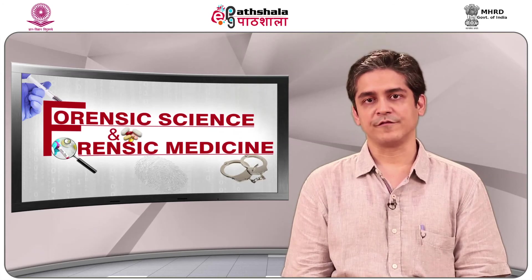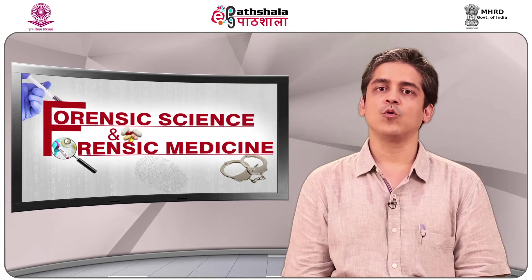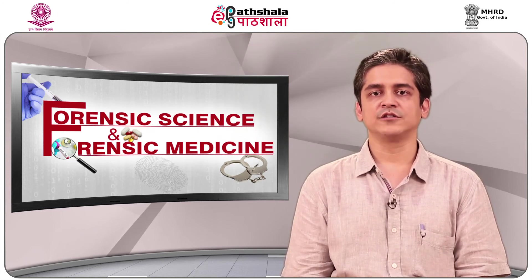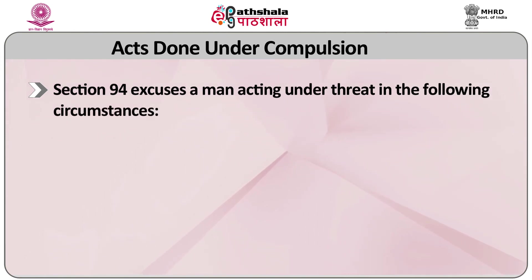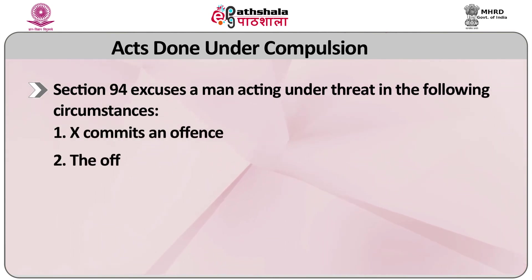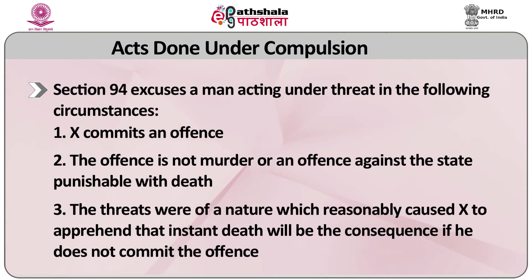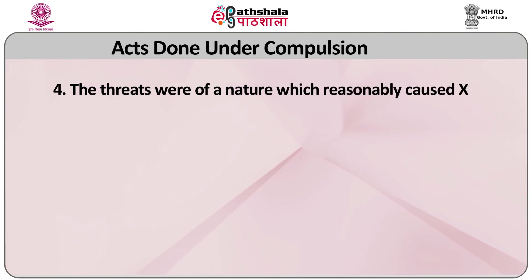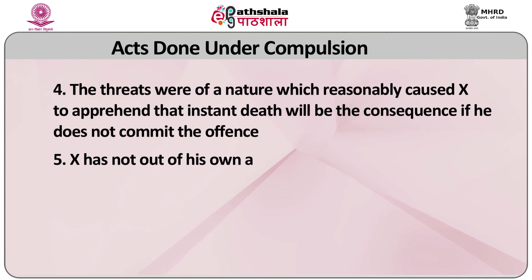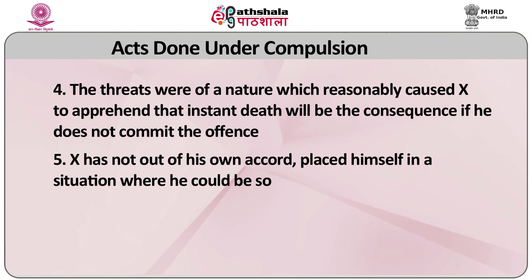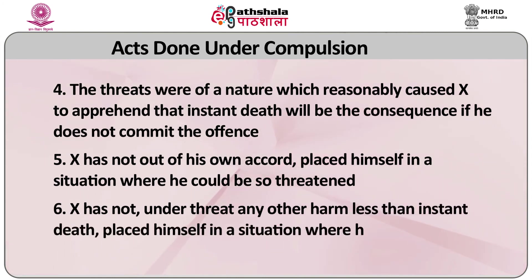Now let's move on to the excusable defense of acts done under compulsion. The foundation of criminal liability is based on a person doing something prohibited by law of his own accord. Thus, if a person commits an act because of a threat, he is entitled to be considered in a different perspective. Section 94 excuses a man acting under threat in the following circumstances: X commits an offense; the offense is not murder or an offense against the state punishable with death; X commits the offense as he is compelled to do so by threats; the threats were of a nature which reasonably caused X to apprehend that instant death will be the consequence if he does not commit the offense; X has not of his own accord placed himself in a situation where he could be so threatened; and X has not under threat of any other harm less than instant death placed himself in a situation where he could be so threatened.